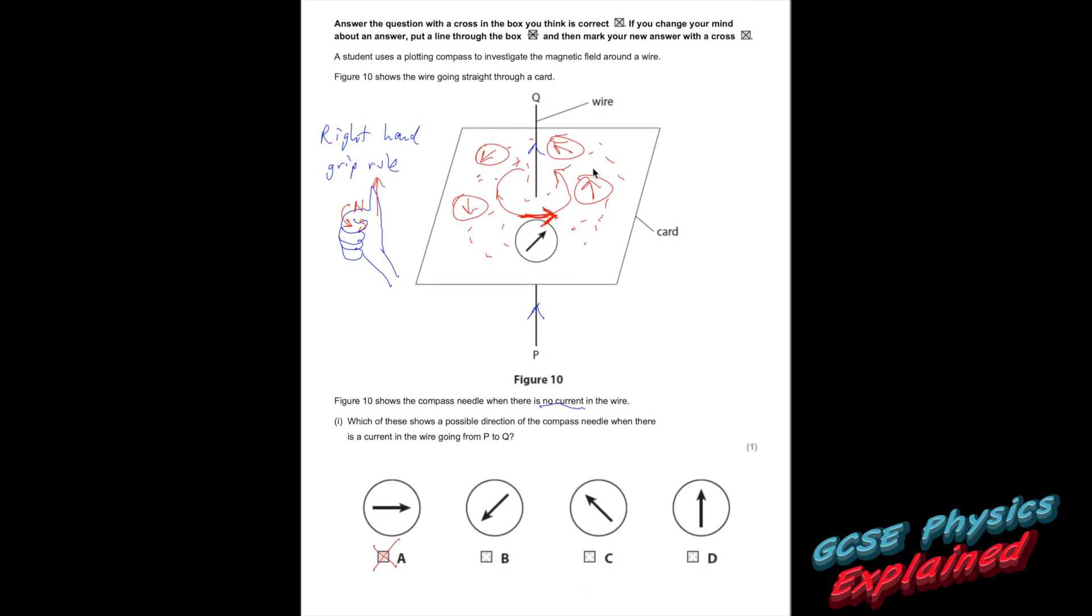All these little dots show you another way you could do it. If you were to sprinkle iron filings all on the card. And then turn the current on. And give the card a gentle tap. All the little iron filings will line up in a circle. Now that would show you the shape. But it wouldn't show you the direction. So you're best to use compasses. You could just use one compass if you want. Put one compass there. Turn the current on. Trace which way the compass is pointing. Then move the compass to each of these different points. With the current still on. And just do the same as before. Just trace which way the arrow is pointing. Which way the needle is pointing. And connect them all up.